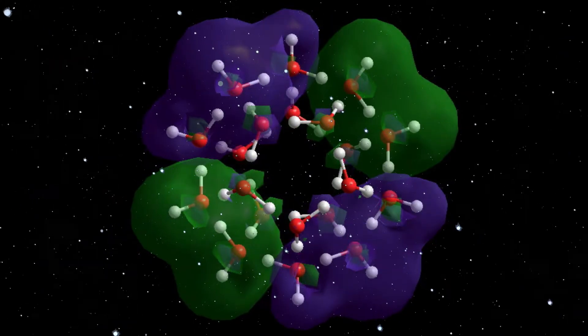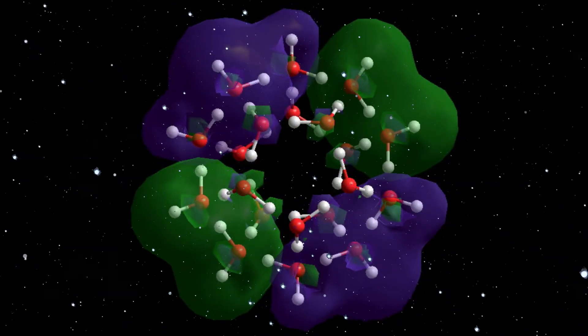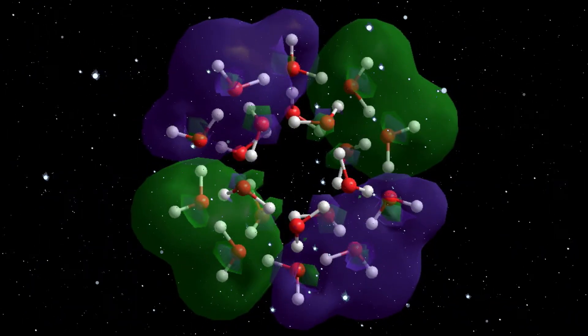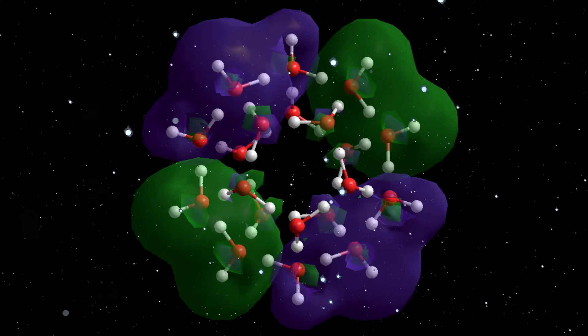Electron occupation of these Rydberg orbitals explains why such water nanoclusters are transparent, and thus are dark matter.